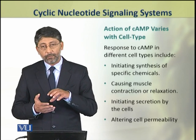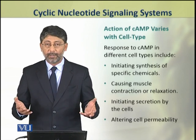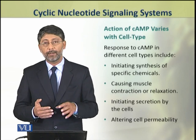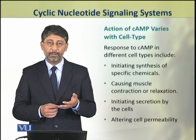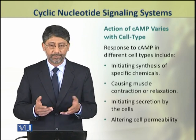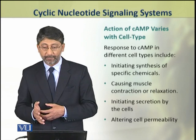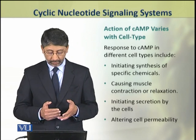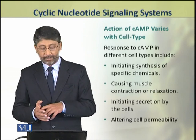We can enumerate some types of actions which are produced or generated by cyclic AMP. For example: initiating the synthesis of specific chemicals, causing muscle contraction or relaxation, initiating secretions by the cells, and altering cell permeability.